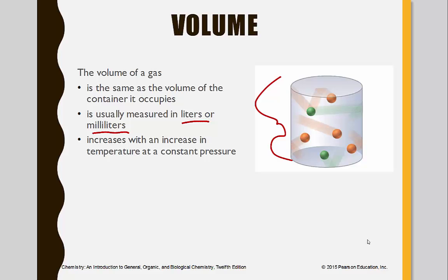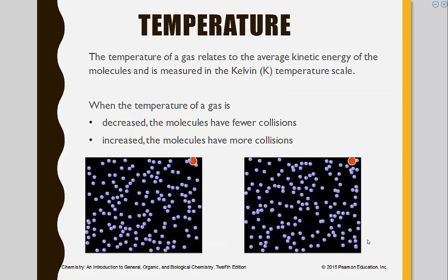So in other words, once you get it hotter, it's going to end up spreading out. The temperature of a gas relates to the average kinetic energy of molecules and is measured in the Kelvin temperature scale. Notice it's not degrees Celsius. That's important. When we're doing equations, it's important to have it in Kelvins. So remember Kelvin is the temperature in degrees Celsius plus 273.